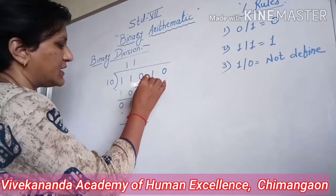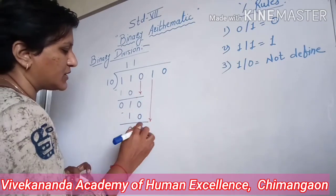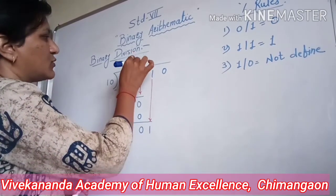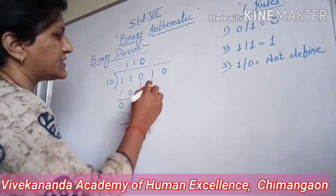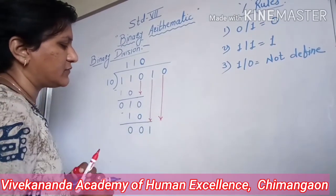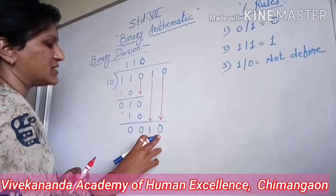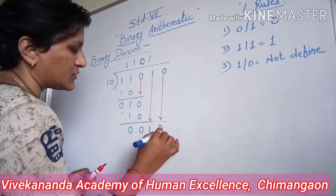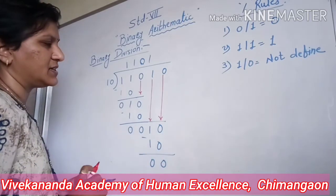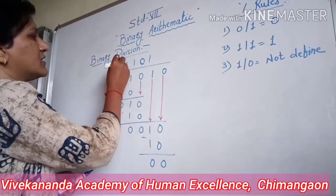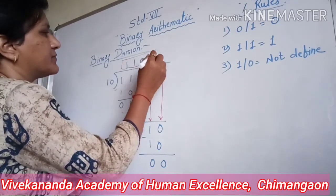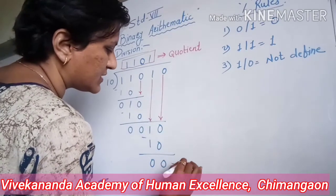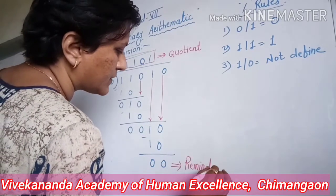Bringing down the next digit, I get the number 1. As this number is smaller than the divisor, division is not possible, so I write 0 in the quotient. I then bring down the next digit and get 10. Now division is possible — it divides exactly. So 0 minus 0 is 0 and 1 minus 1 is 0. After division, the quotient and remainder are determined.